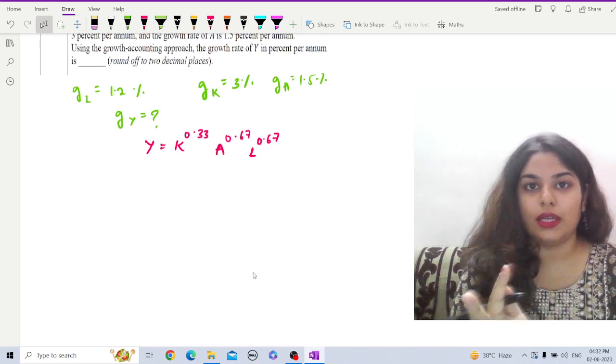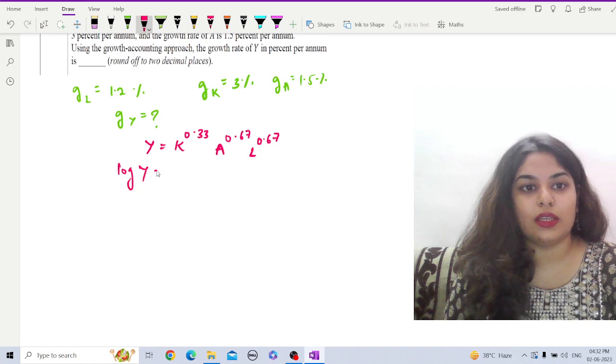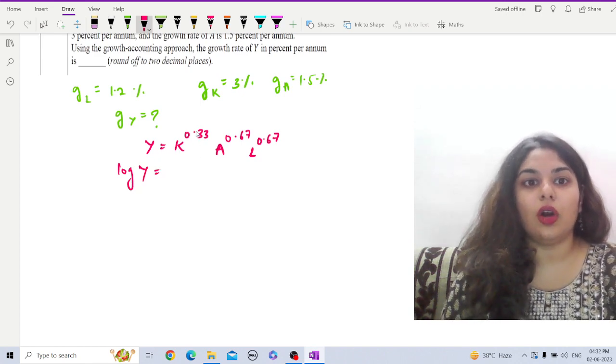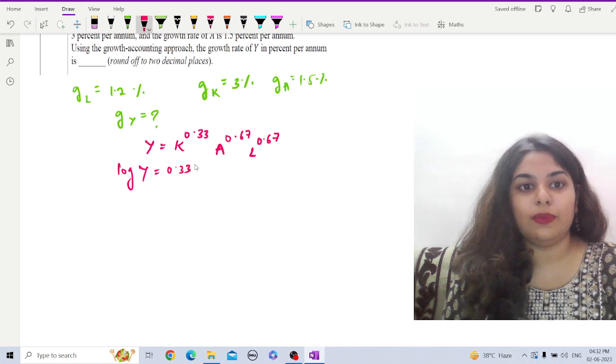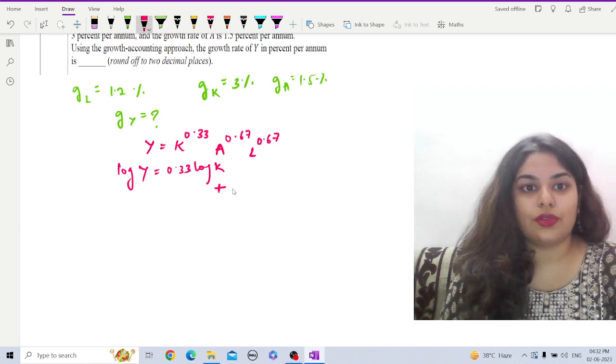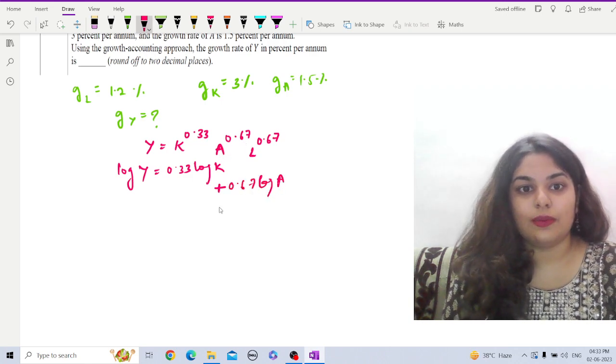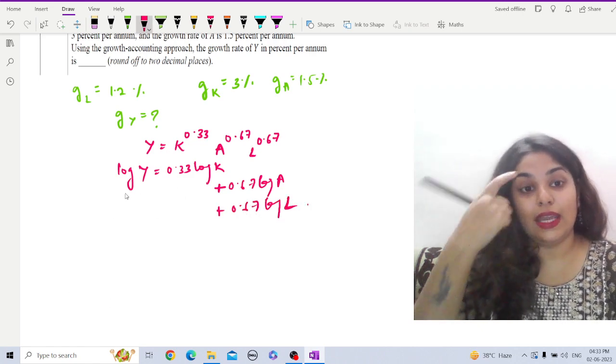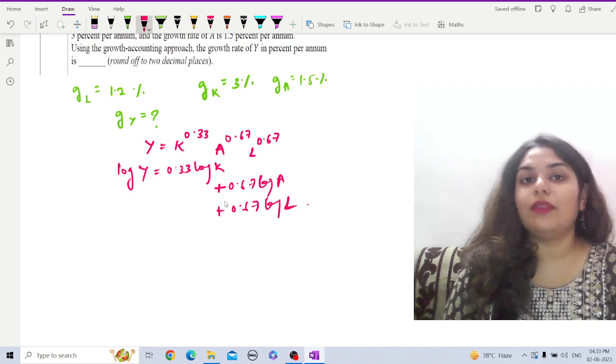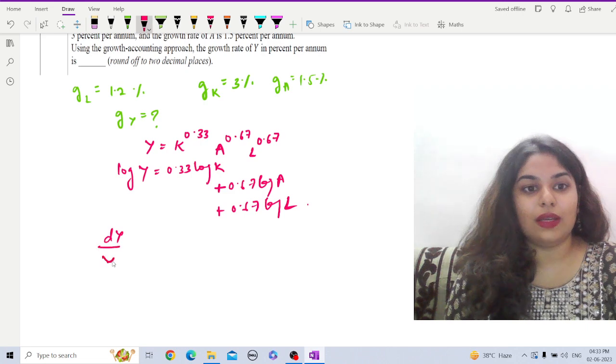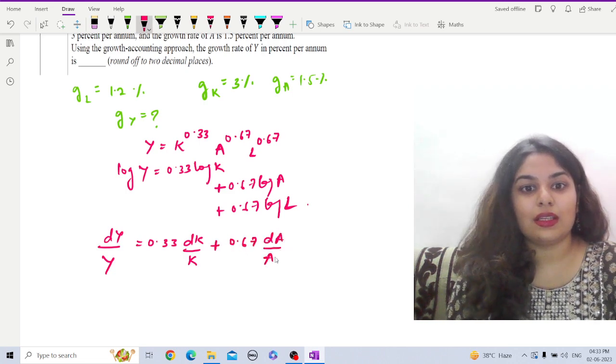So log Y equals - we know if we apply log, the power will be multiplied - 0.33 log K. If it is multiplication, we will simply add all the values. So this is 0.67 log A plus 0.67 log L. Now let us take the total derivative on both sides. We will get dY/Y = 0.33 dK/K + 0.67 dA/A + 0.67 dL/L.